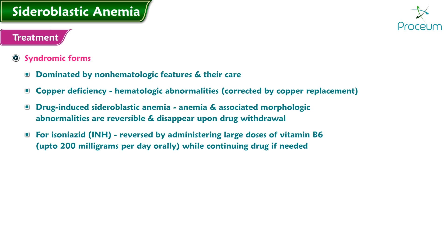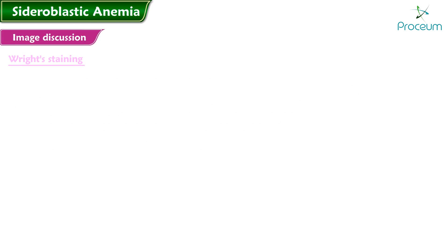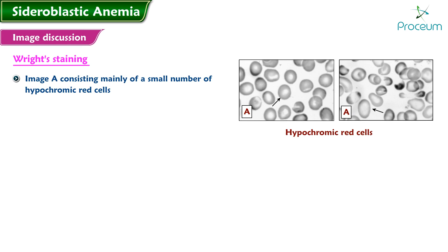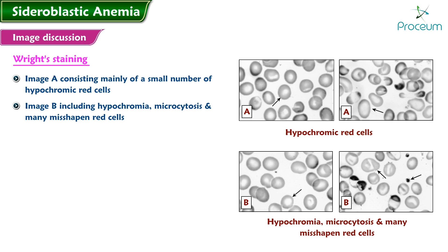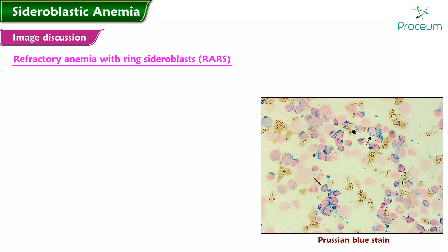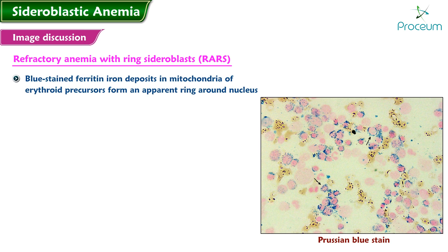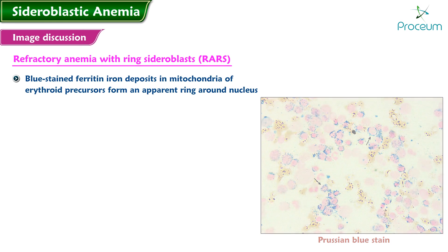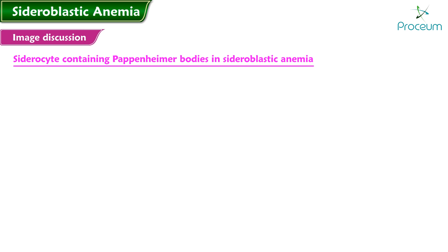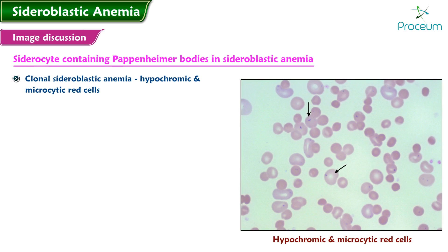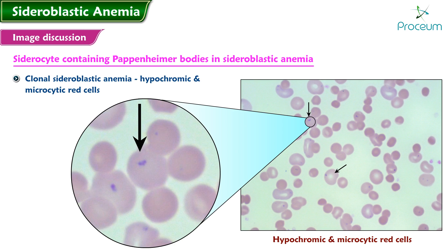For isoniazid (INH), the anemia can also be reversed by administering large doses of vitamin B6 — up to 200 mg per day orally — while continuing the drug if needed. Image discussion: Wright staining image A shows mild degree of changes consisting mainly of a small number of hypochromic red cells. Image B shows severe changes including hypochromia, microcytosis, and many misshapen red cells. In refractory anemia with ring sideroblasts, Prussian blue stain of the bone marrow shows blue-stained ferritin iron deposits in the mitochondria of erythroid precursors, forming an apparent ring around the nucleus. An electron micrograph shows a single erythroblast with iron-laden mitochondria — electron dense deposits clustered near its nucleus. A siderocyte containing Pappenheimer bodies in sideroblastic anemia peripheral smear from a patient with clonal sideroblastic anemia shows a population of hypochromic and microcytic red cells; one hypochromic red cell has three iron-containing inclusions called Pappenheimer bodies.